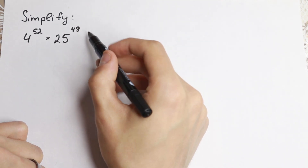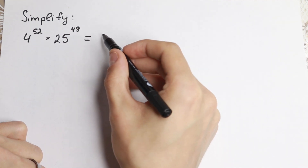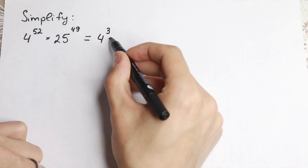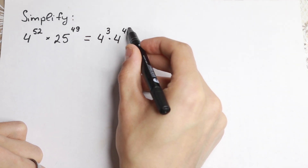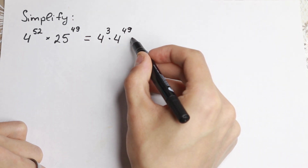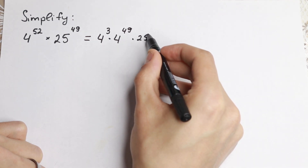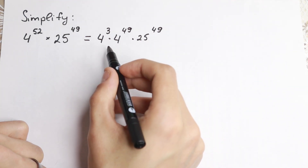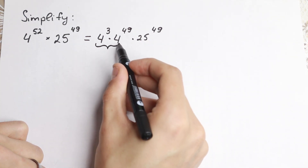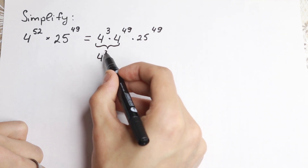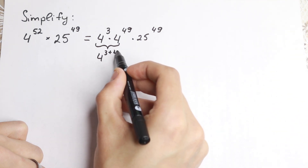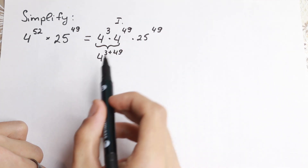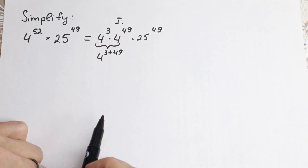Take a look closely. We can write 4 to the power of 52 as 4 cubed times 4 to the power of 49, and then times 25 to the power of 49. Why can I write this? Because if we go in reverse, we can write it as 4 to the power of 3 plus 49. This is the first really good property, the first good rule in this case.